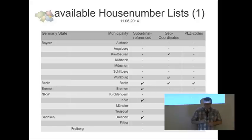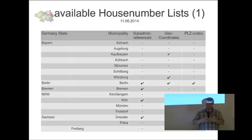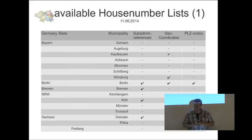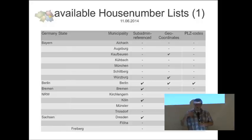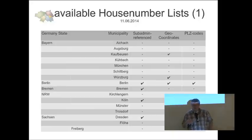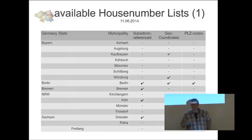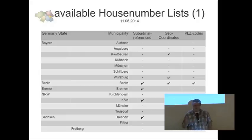This sub-administration information is better because we can make smaller evaluations, and the mapper will work in the local sub-administration area and not in the complete list of all Munich with 150,000 addresses. The second column - geocoordinates - means that we have very few cases where the government already gives us geocoordinates. This is sometimes possible because bigger cities own the data and can give us the geocoordinates, but most times they don't because providing addresses with geocoordinates is a business for them.